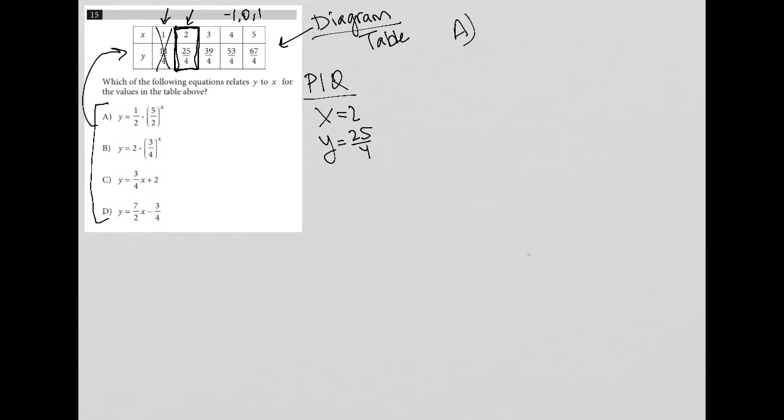Choice A would say that instead of y equals one half, I'm going to say 25 over 4 is equal to one half times parentheses 5 over 2 to the second power. When I simplify this, 5 over 2 to the second power is 5 squared, which is 25 over 2 squared, which is 4. Then I still have one half times this. It's pretty impossible that this is equal. This is not equal to each other. So A is gone.